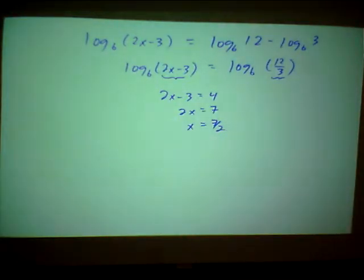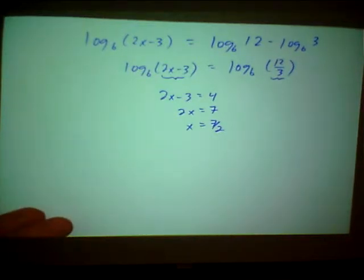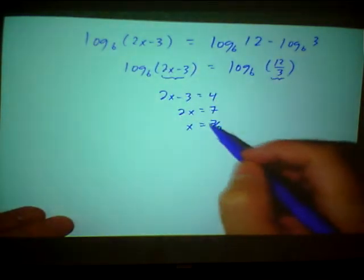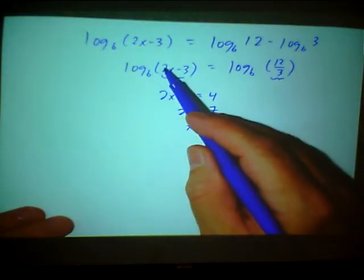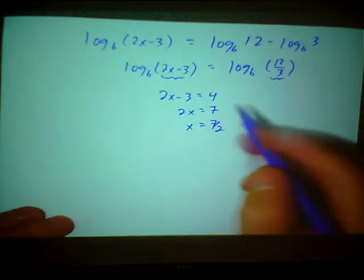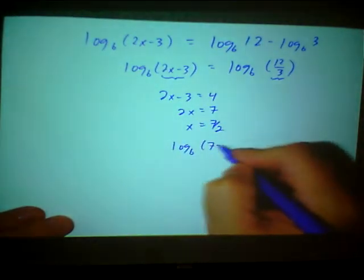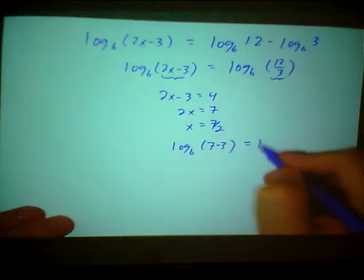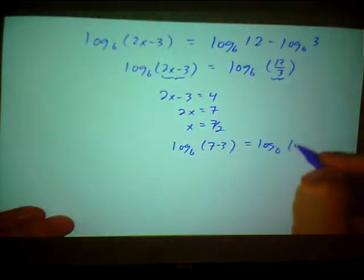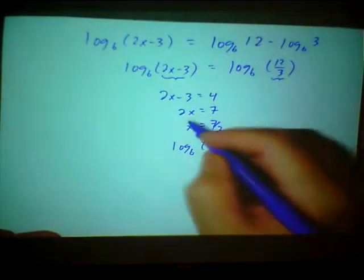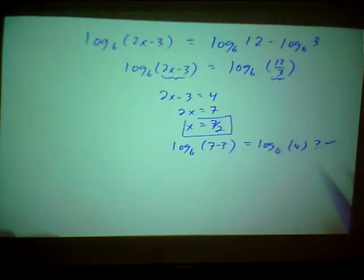Now, if I go back and check it, let me just put the 7 halves into the second equation here. If I put 7 halves in for x, 2 times 7 halves is 7. So log base 6 of 7 minus 3, does that equal log base 6 of 4? Well, 7 minus 3 is 4. Yes, it does. There's my solution.